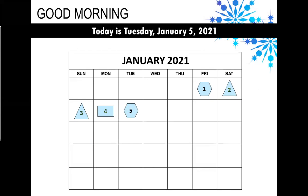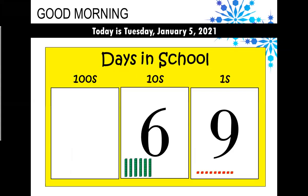So today is Tuesday, January 5th, 2021. We have been in school for 69 days. So 69 has six 10s and nine ones. And of course, we remember that we can only put nine for each digit. So tomorrow, when we go to day 70, we're going to have to move all of those ones out of there and combine them into another 10.